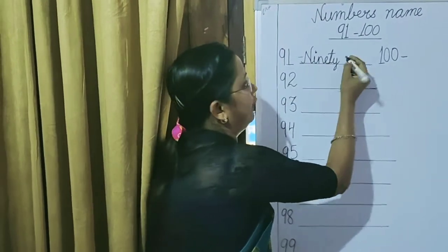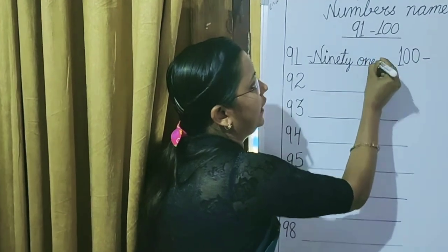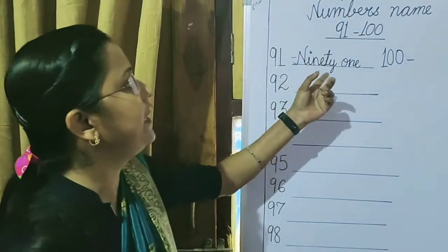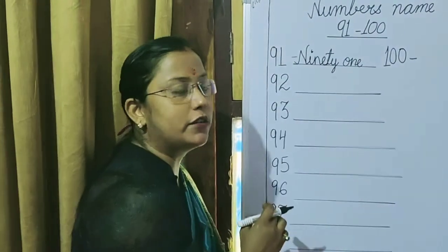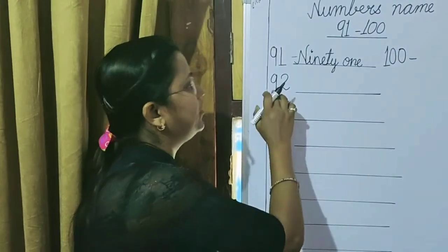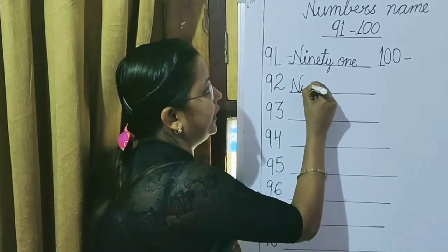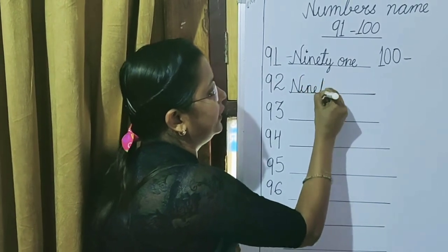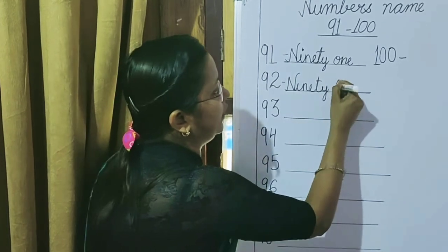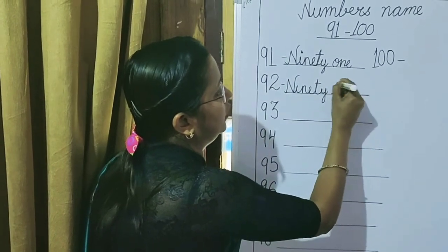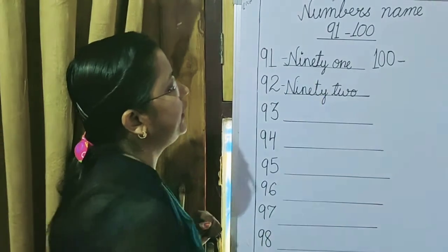Then, 1. We have to write the spelling of 1: O-N-E. So 90 plus 1 gives us 91. Then, after 91, which number comes? 92. Same spelling for 90: N-I-N-E-T-Y. Then 2 — spelling of 2 is T-W-O. So that is 92.